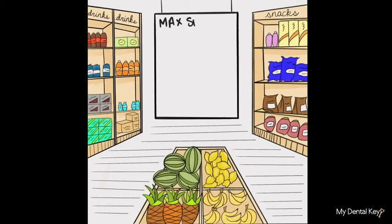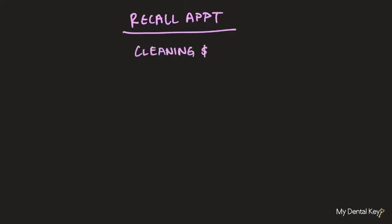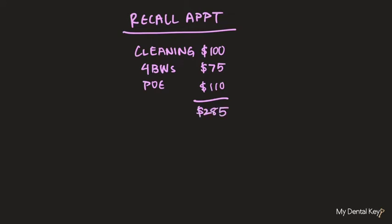For example, think of taking a trip to the grocery store. Say you have a total of $100 and you can spend that on groceries that day. You can use the $100 however you'd like. Say you want to spend it on fruit, drinks, and snacks. If you spend $30 on fruits, you will only have $70 left to spend on both drinks and snacks. So, if for example a recall appointment costs the insurance company $100 for a cleaning, $75 for a total of 4 bite wings, and $110 for a periodic oral exam, then the total the insurance will pay is $285.